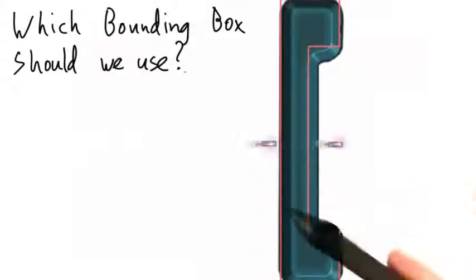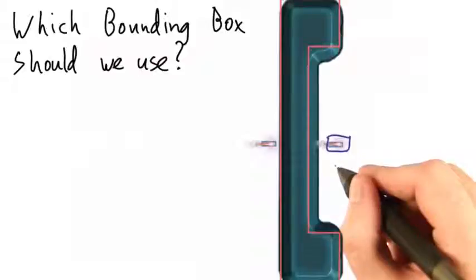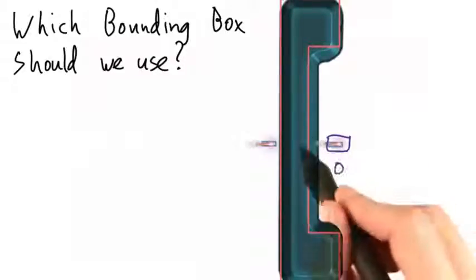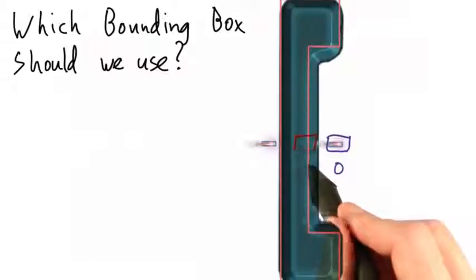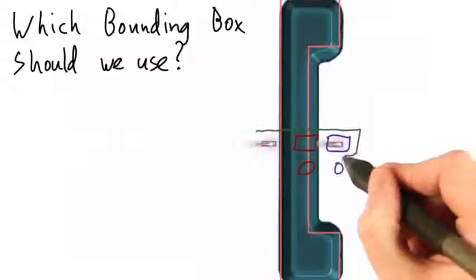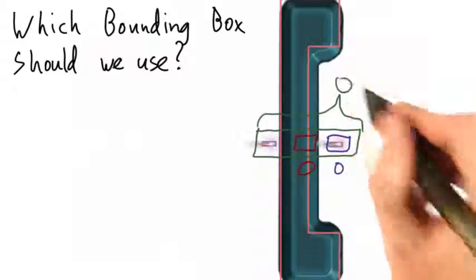So then, which bounding box should we use? Do we want to end up using this bounding box right here? Or maybe we should calculate some halfway point between the two right here, and use that bounding box. Or maybe we want to use the entire swept area, swept out between the two time steps, and use that instead.